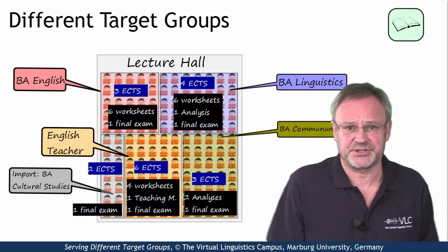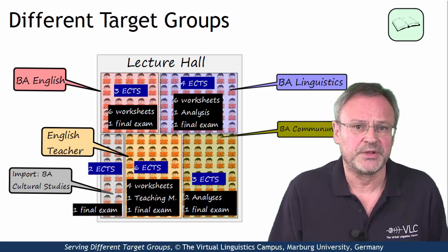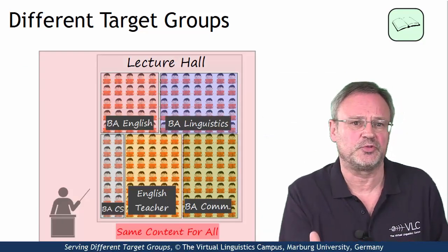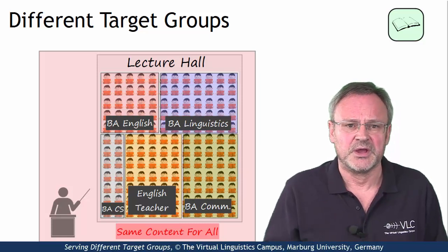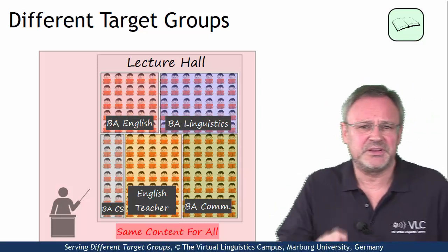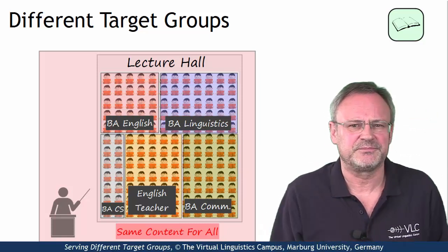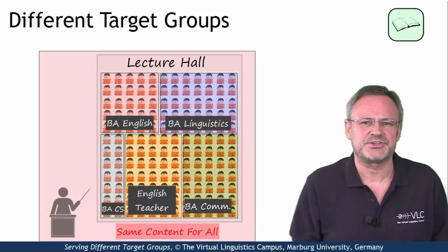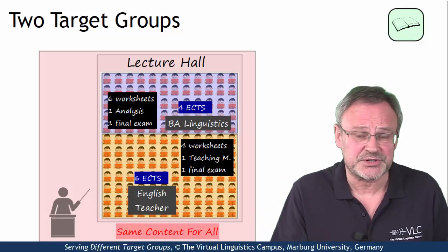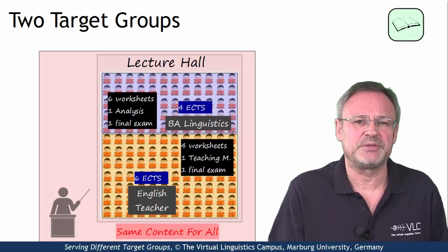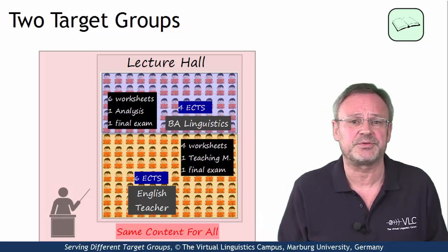In a traditional scenario, where content delivery takes place within the classroom, the content is the same for all these different groups, despite their different study goals and requirements. My version here might be a bit exaggerated — five groups within one class, that could be a bit too much. But two different groups within one class, that's not an exception at all. It is an enormous problem at our universities, especially after the implementation of the Bologna process.